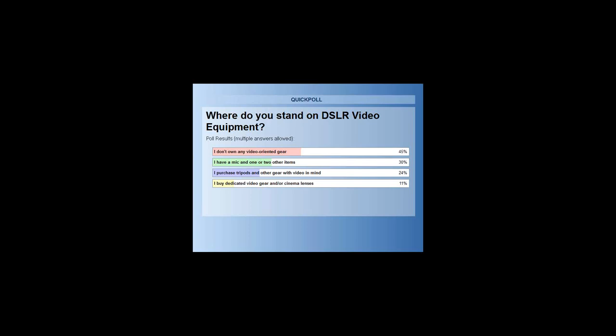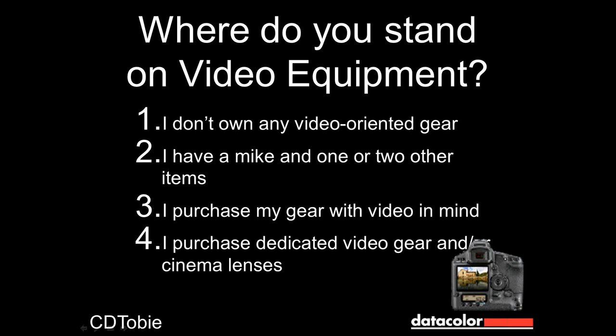Poll results on video equipment: almost half own no video-oriented gear; almost a third have a mic or one or two other items; about a quarter have purchased tripods and gear with video in mind; and 11% buy dedicated video gear or cinema lenses. Hopefully after this webinar, everyone will think at least a little bit in that direction.